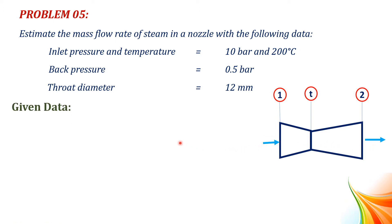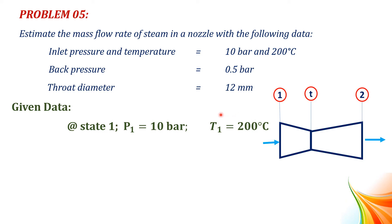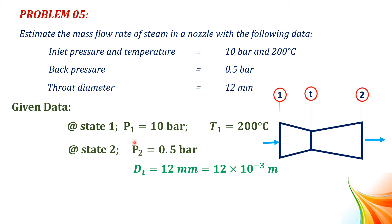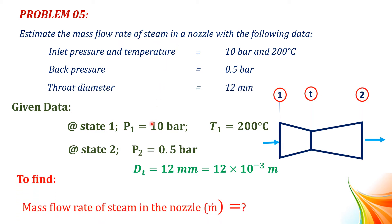Now we write the given data. Inlet pressure P1 equal to 10 bar and inlet temperature T1 equal to 200 degrees centigrade. Back pressure or exit pressure equal to 0.5 bar. Throat diameter DT equal to 12 mm, which we convert to 12 × 10⁻³ meters. We have to estimate the mass flow rate of steam M-dot.